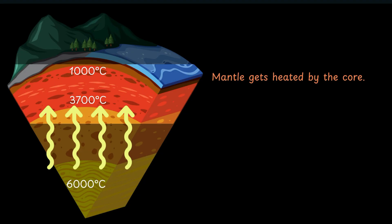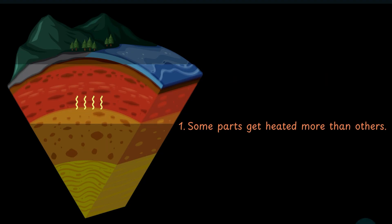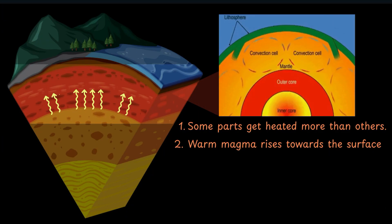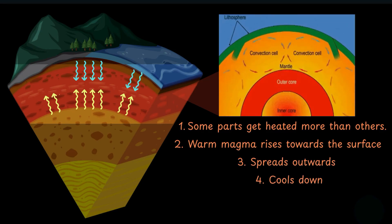Now, some parts of the mantle get more heated up than the others. And in the hotter parts, the warm magma begins to rise upwards. It then spreads outwards, eventually getting cool enough to sink back down. It flows back towards the area it originally rose up from and warms up as it does so, eventually getting warm enough to rise up again. And this whole process repeats itself.